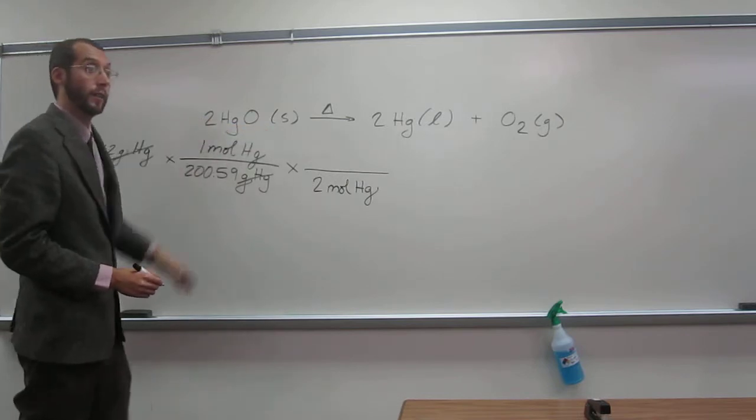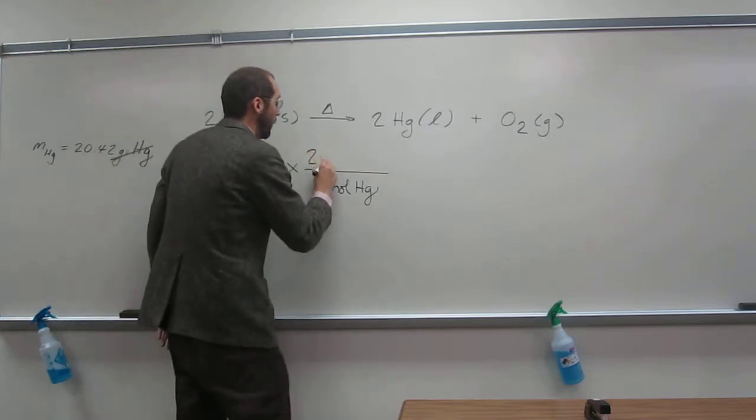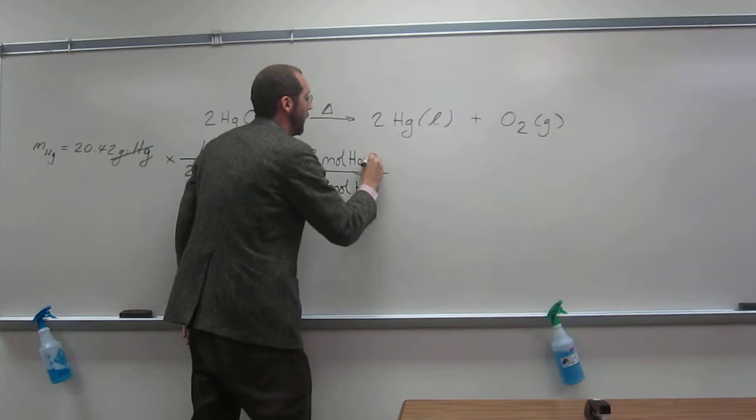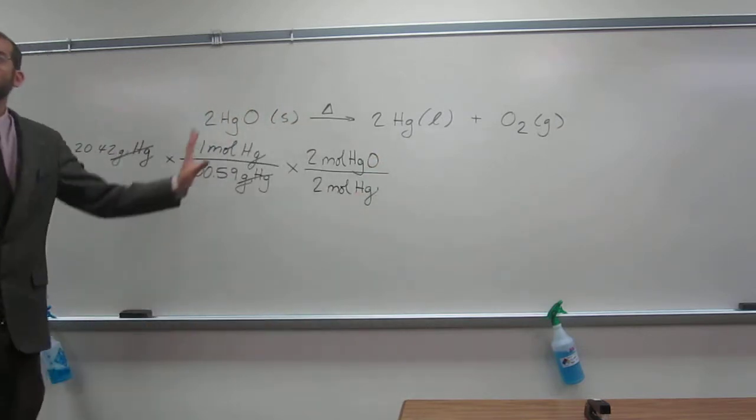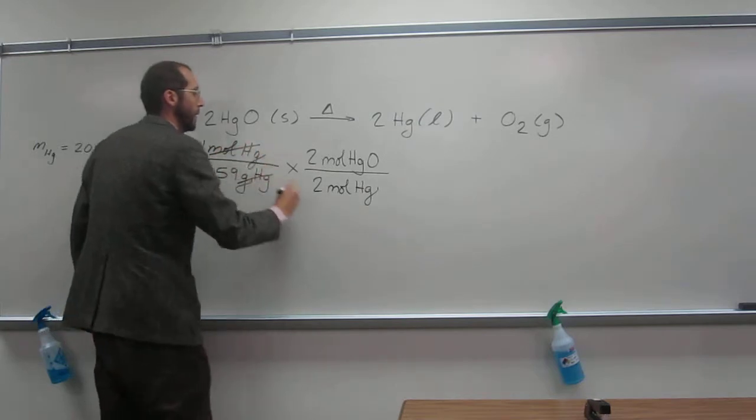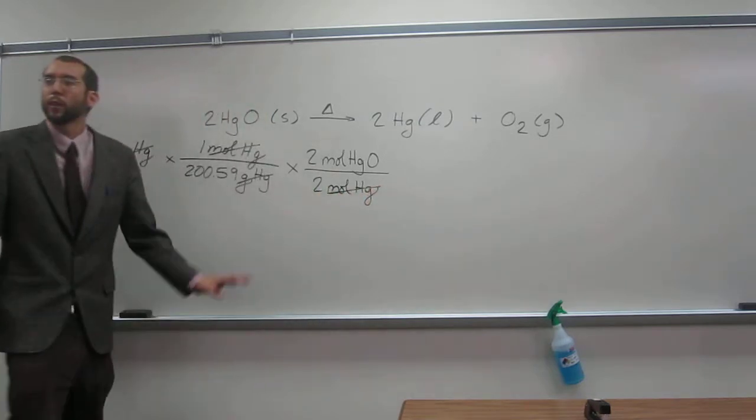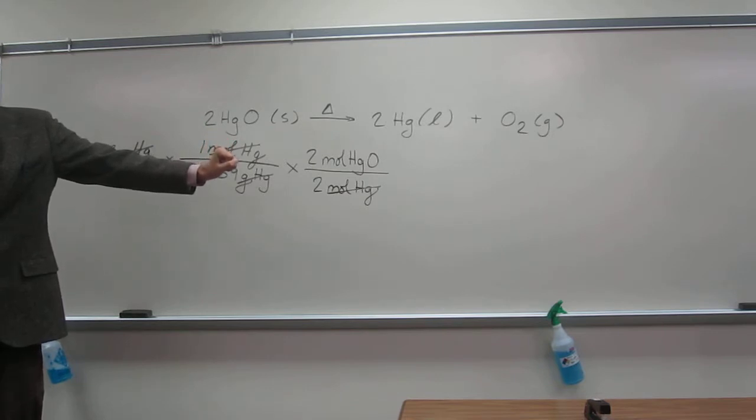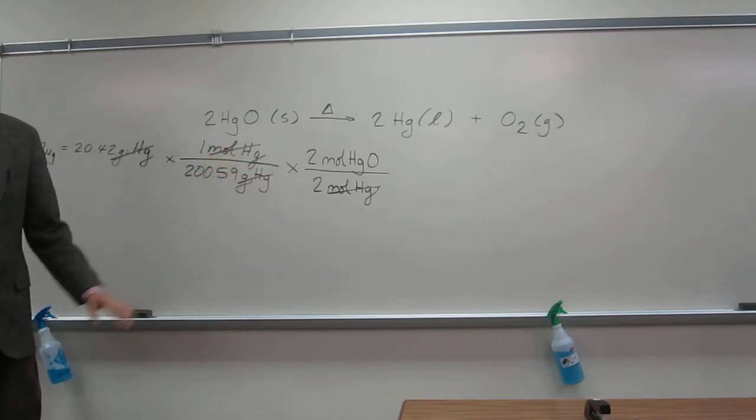Two moles of mercury, right? Because we're trying to figure out mercury 2 oxide, how many moles of mercury 2 oxide would that be? Two, right? That's the conversion. So is everybody okay with that step? What do we do now? Cancel. We are left with units of moles of mercury 2 oxide. Is everybody cool with that?